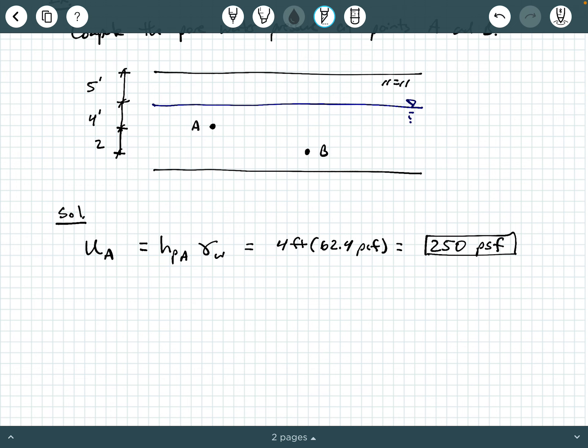What about the pore water pressure at point B right here? Well, again, the same basic equation. U sub B equals HP at point B times the unit weight of water.